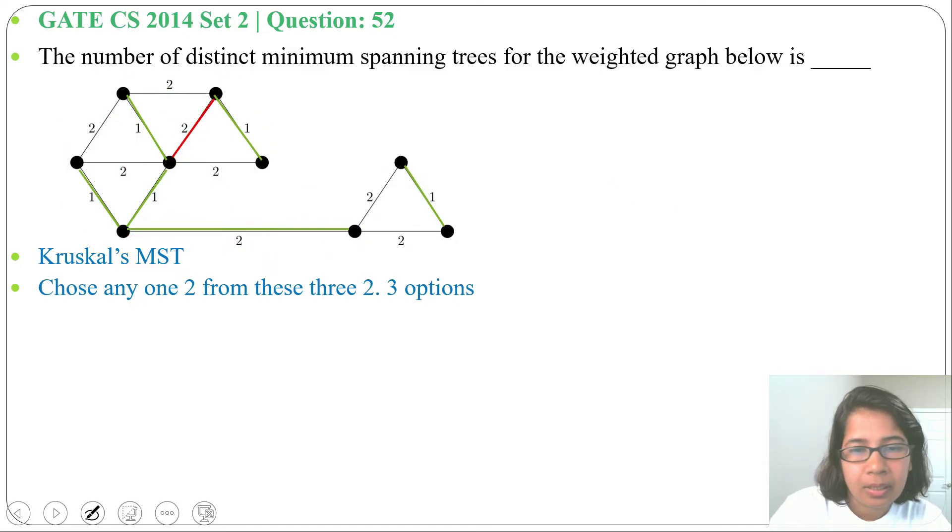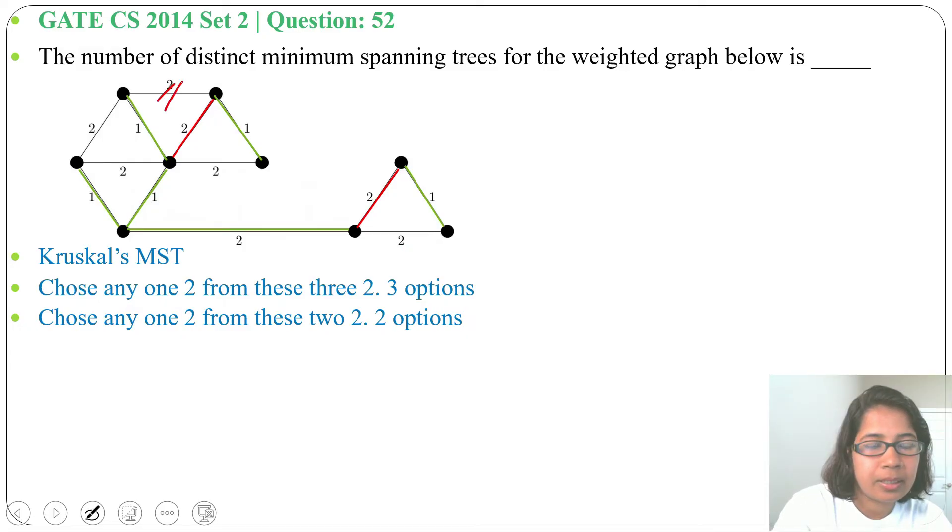Next we'll choose any one 2 from these 2, so any one we choose it will be connected. Let me choose this one. So there are 2 options. From these three 2s we can choose any one 2, there are 3 options here. From these two 2s we can choose any 2, there are 2 options.